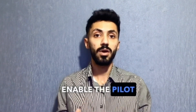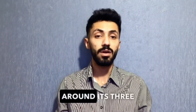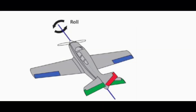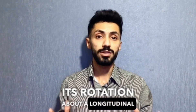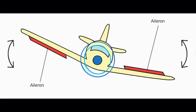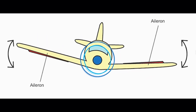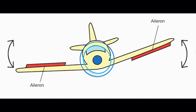First, the longitudinal axis. Its rotation about the longitudinal axis is used for roll. Roll is controlled by the ailerons.